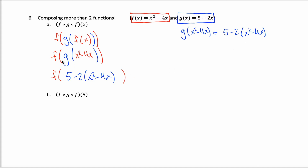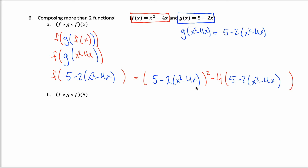It's getting pretty ugly, but we're really close to done. All we have is function f with a strange-looking input. The function f of x gives something squared minus 4 times something. That something is this whole mess in blue — 5 minus 2 times x squared minus 4x. If I copy it inside the two parentheses for f, I'll have an expression representing f of g of f of x. This could be simplified, but the point is to show you're not limited to two layers of composition — you can have three or more.